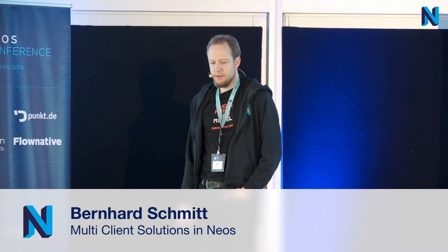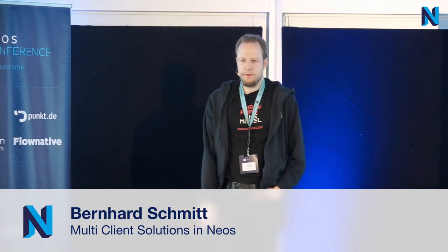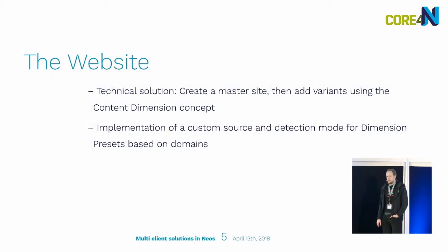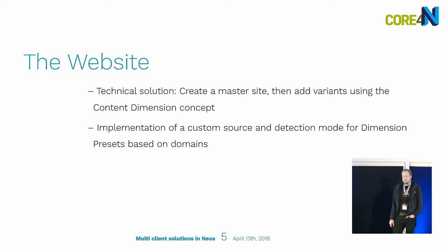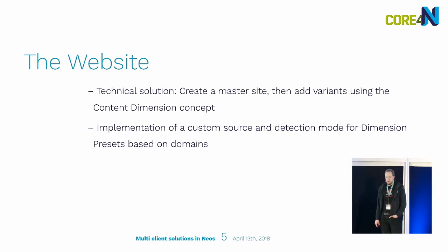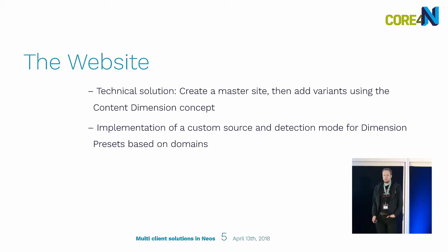For this to work, we also had to implement a custom source and dimension detection mode for dimensions — we used domain for this. Each time a domain was added to the Neos backend, a new content dimension value was added. A custom dimension detection mode was also added so that on each request the domain was evaluated to determine which member site to show.